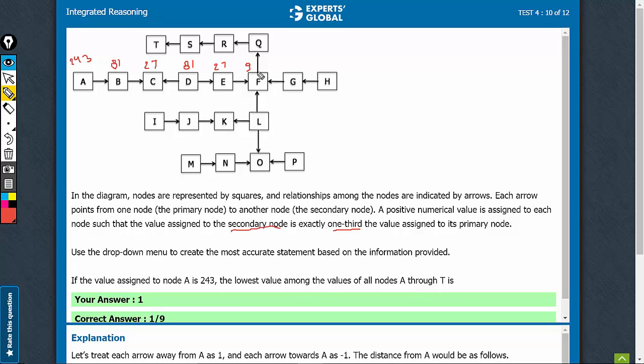Now, primary of 9, so this becomes 27. So, this becomes 81. We need to find the lowest value. 9, primary of 9, so this becomes 27. This becomes 9.